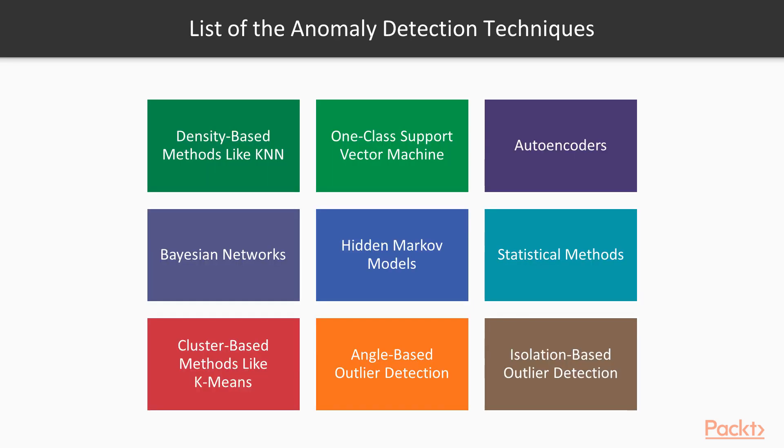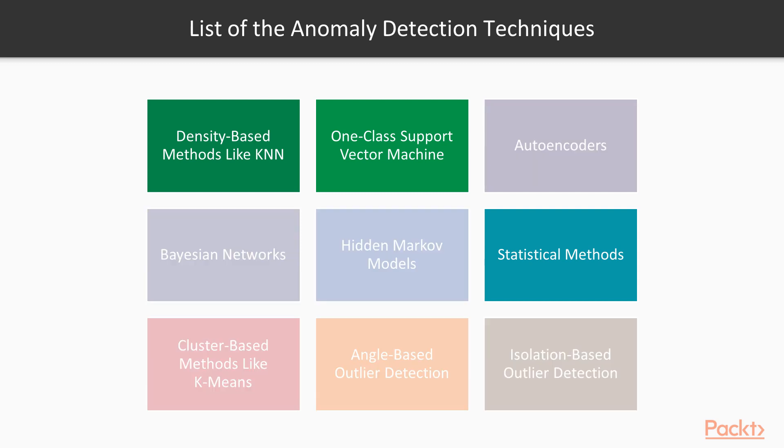Here in this slide, you can see different types of algorithms and methods that are mainly used for anomaly detection. These techniques include density-based methods like k-nearest-neighbor or KNN, the one-class support vector machine, the autoencoders, the Bayesian networks, the hidden Markov model, the statistical approaches, the cluster-based methods like k-means, the angle-based outlier detection method, and the isolation-based outlier detection. In this section, we are going to explain three of the most common methods of the anomaly detection.